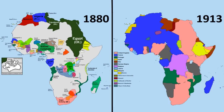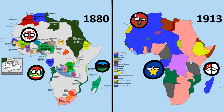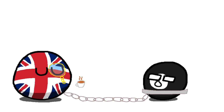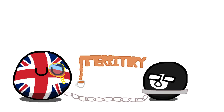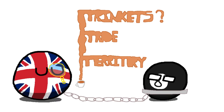Let's just get the obvious one out of the way first. European colonization and interest in Africa is what made these borders. Their reasons for entering Africa are what I like to call the three T's: Territory, Trade, and Trinkets. There are many synonyms for resources that start with the letter T, just go with it.